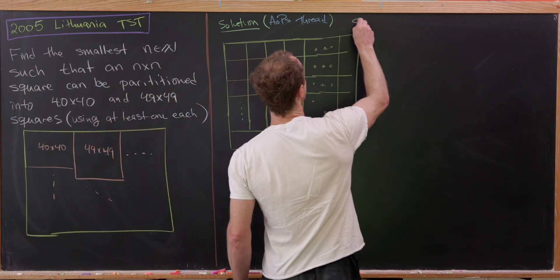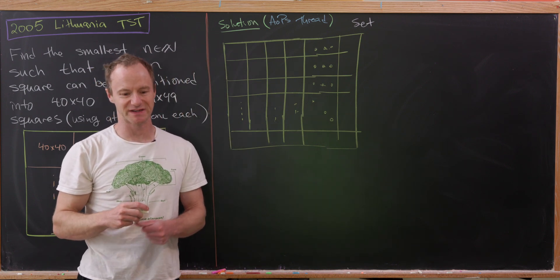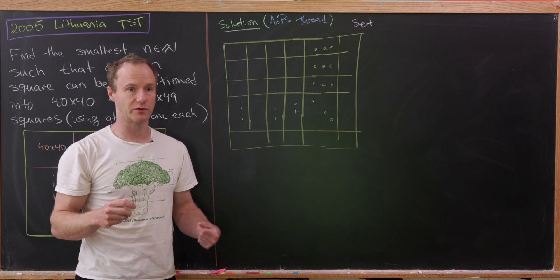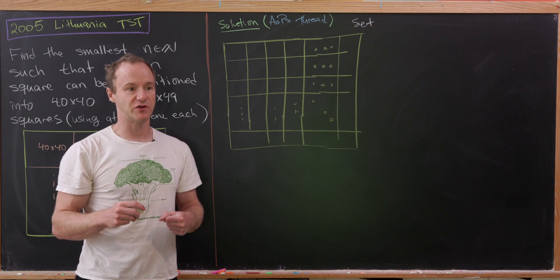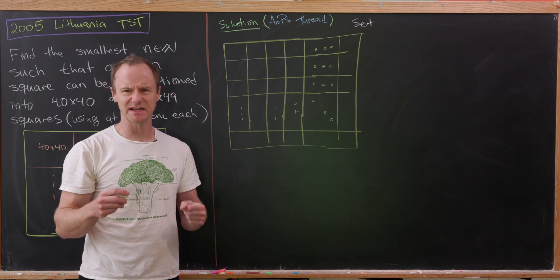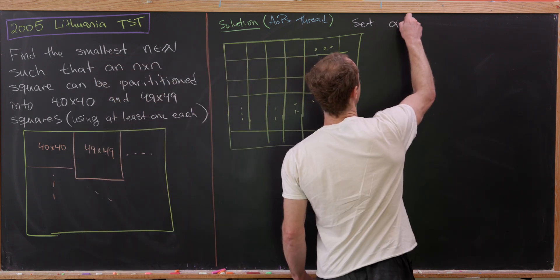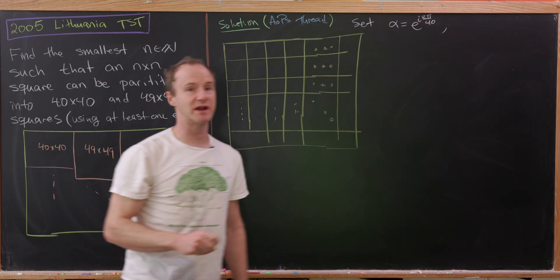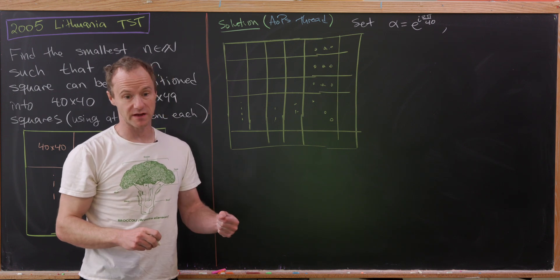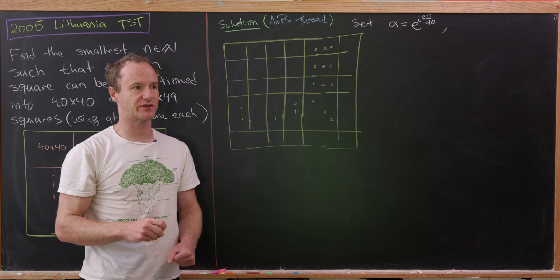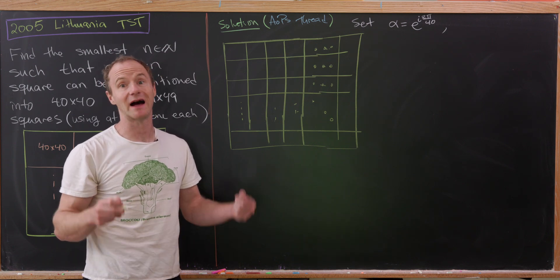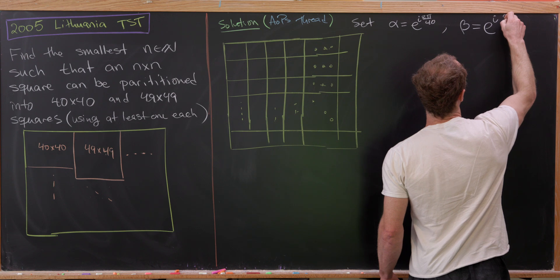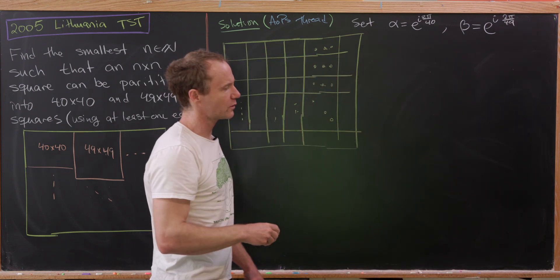Now we're going to take two primitive roots of unity. Those are complex numbers satisfying z to the m minus one equals zero — an mth root of unity — and a primitive mth root of unity means that if you raise it to any power less than m, you do not get one. So let's set alpha equal to e to the i times 2π over 40, making it a primitive 40th root of unity where alpha to the 40th is one, but alpha through alpha to the 39 are all not equal to one. Then we'll set beta equal to e to the 2πi over 49, a primitive 49th root of unity.